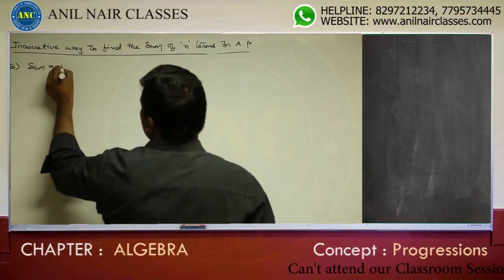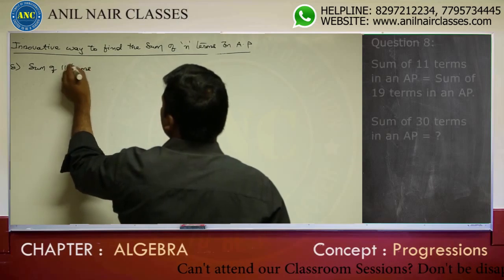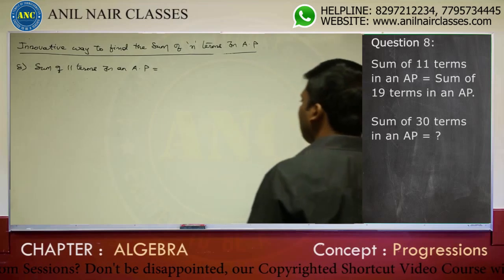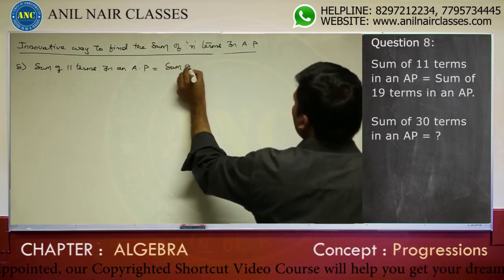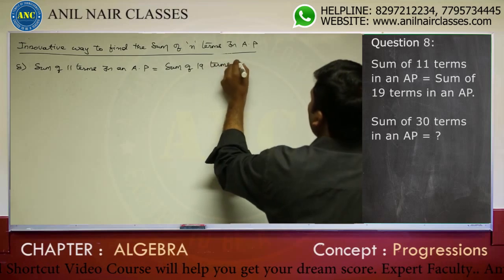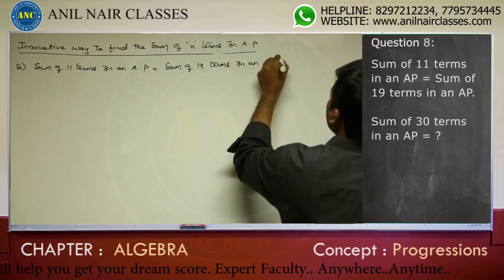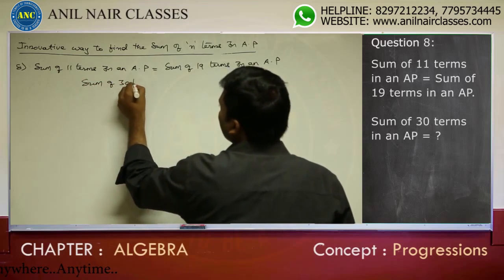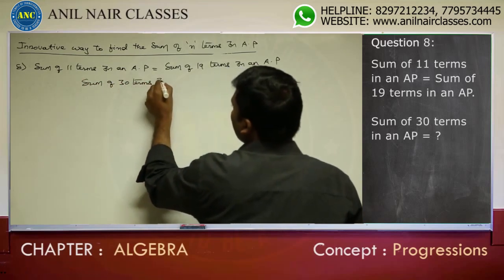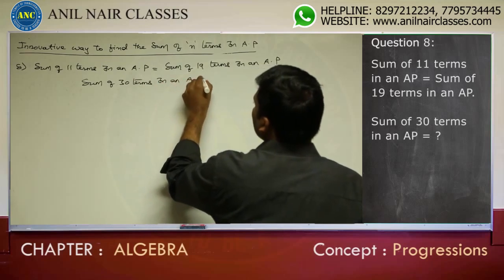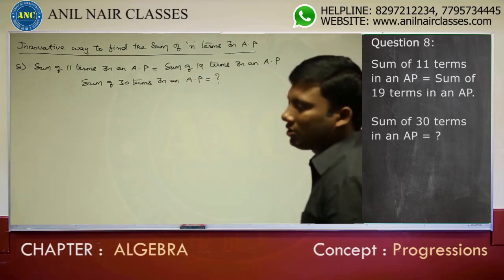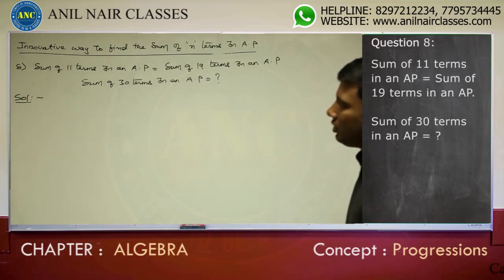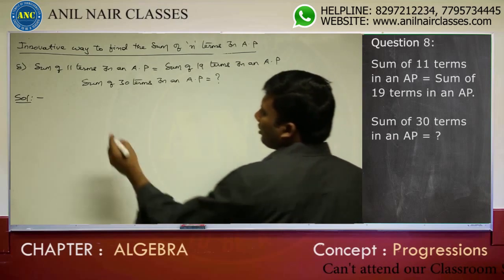The sum of 11 terms in an arithmetic progression is equal to the sum of 19 terms in an arithmetic progression. The question asks: what is the sum of 30 terms? Step number 1: consider the sum of 11 terms in an arithmetic progression.